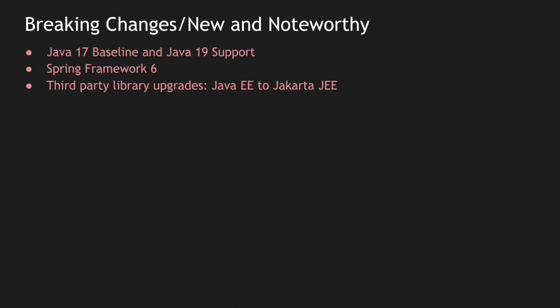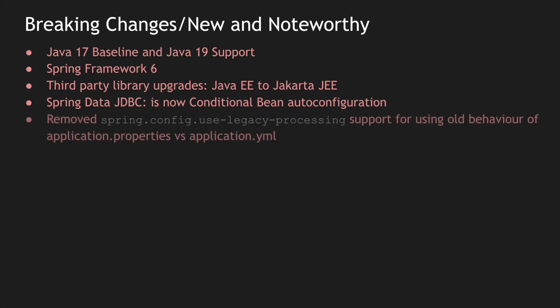Another noticeable breaking change is with Spring Data JDBC — there is a breaking change in terms of providing a conditional bean auto-configuration compared to what was done earlier. It's a minor change, but if you're using Spring Data JDBC you may have to re-inject the bean in terms of conditional bean injections using auto-configuration. Also, if you were using Spring Boot 2.4's spring.config.use-legacy-processing property for loading properties and YAML file configurations, that support has been dropped in Spring Boot 3.0.